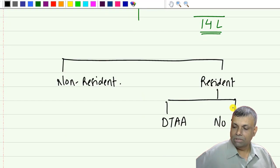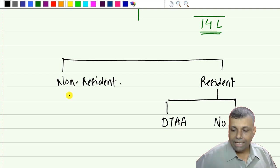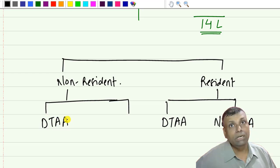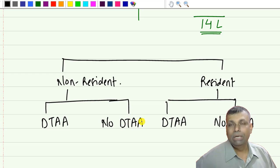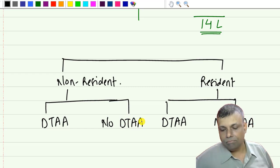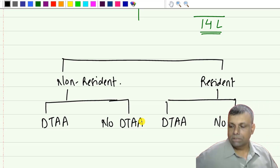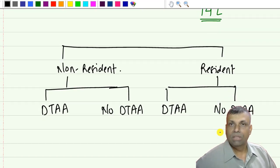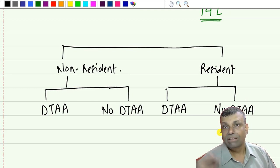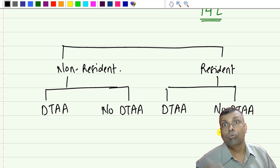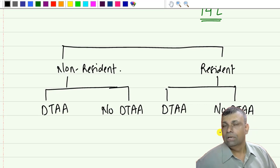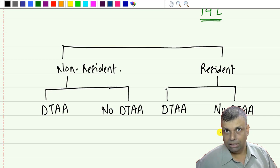In either situation - whether you are resident or non-resident - there is a possibility that India and that foreign country have a DTAA or there is no DTAA between India and that country. If India and that particular country have a double taxation avoidance agreement, then what rebate you will get and what relief you will get is part of that agreement - it is basically like a treaty - and as per that, you have to follow and give the relief.